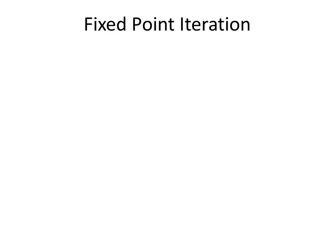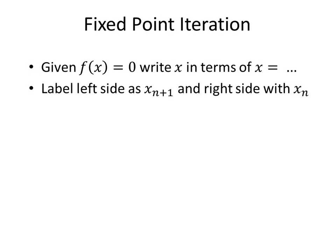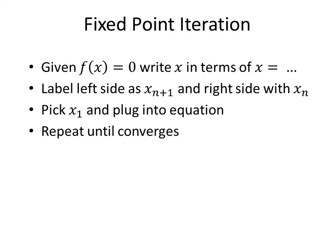So how does fixed point iteration work? First, if we're given an f(x), we'll set it to 0 and then write it so that we have x equals something. Then we'll label the left side as x_{n+1} and the right side with x_n. Then we'll go ahead and pick an x_1 and plug it into our equation and repeat it with every new x until it converges.